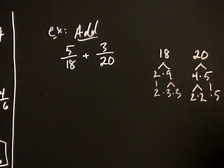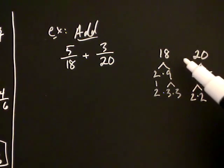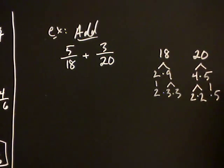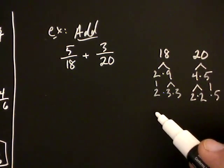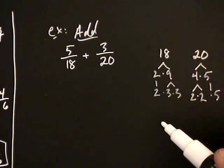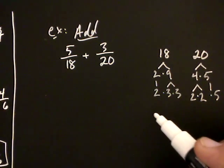At this stage, I've written eighteen as a product of primes, and I've written twenty as a product of primes. Now what we're going to do is build up what's called the LCD — the least common denominator — which is the smallest number that both eighteen and twenty go into evenly. I'll create another video explaining why this is the case, but for right now let me just show you how we do it.